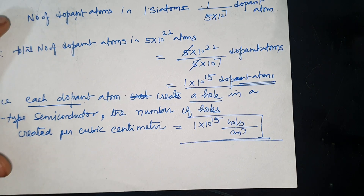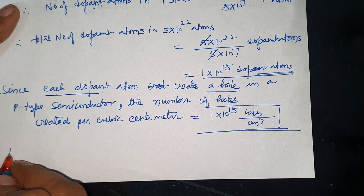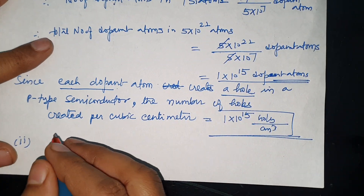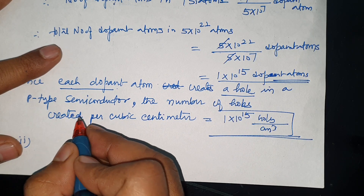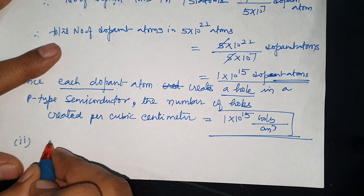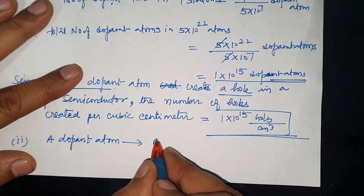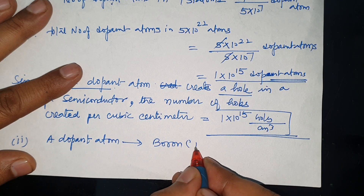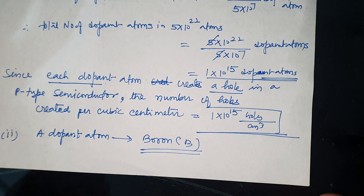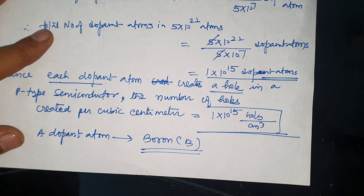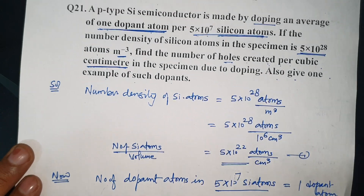Also, one example of such a dopant: boron, aluminum, indium, gallium. To make a P-type semiconductor, we add trivalent impurities to pure silicon. Boron is a trivalent atom. I hope this question was fully understood. Keep studying and stay happy.